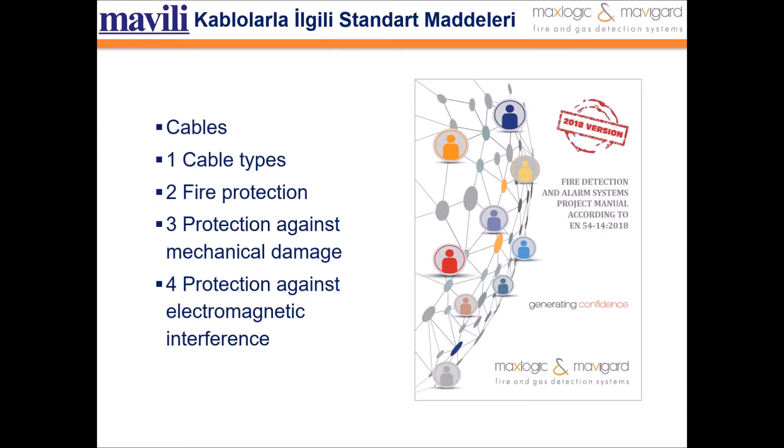The consequences of the fire should not affect the target of the fire detection and alarm system. The following paragraphs provide recommendations to achieve this goal. Cables can be embedded in the building structures, or cables can be protected by laying inside pipes.